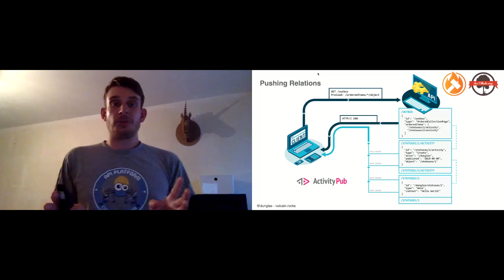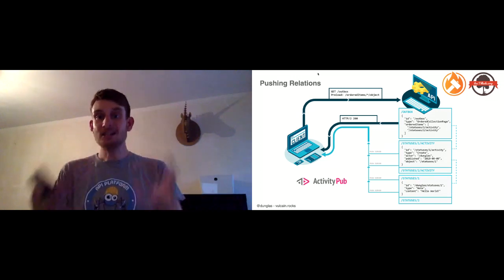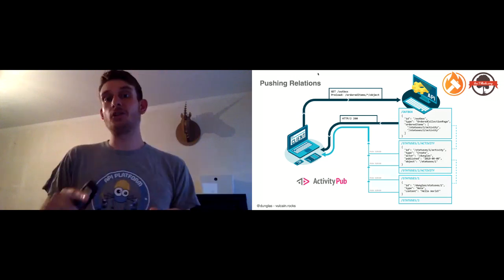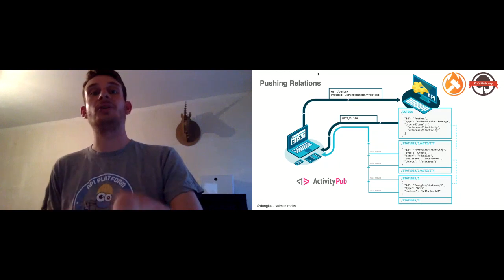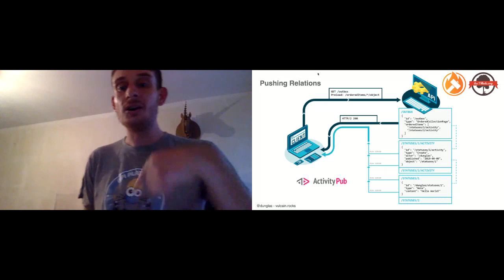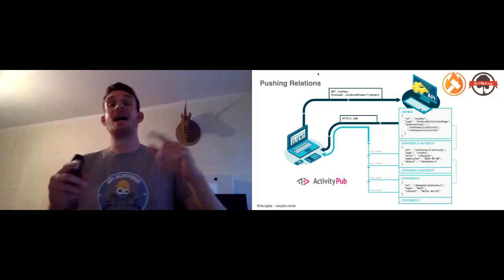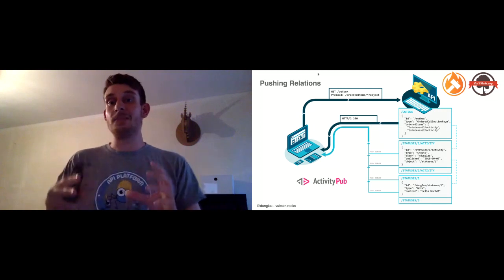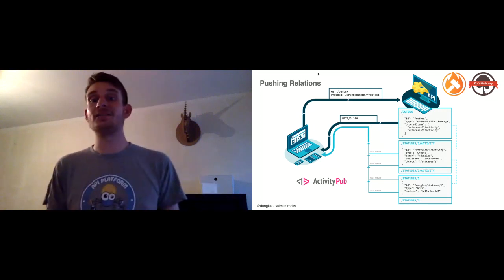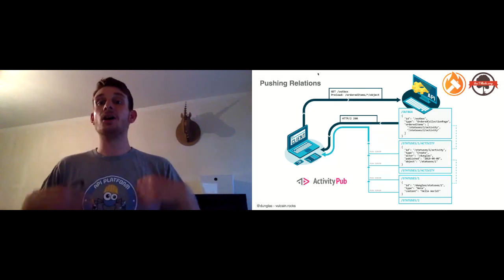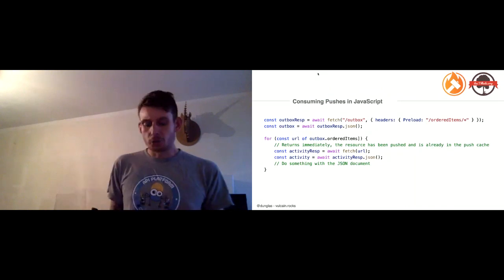With Vulcain, you can send a single HTTP request with a special header — a JSON pointer — and in that header you can traverse all relation graphs. You specify that you need all activities in the outbox, and for all activities you need the statuses (which are in the object field of each activity). Using HTTP/2 server push, the Vulcain API gateway will, when the first outbox request is sent, pre-emptively push all the needed HTTP responses — all the activities, all the statuses — in parallel.